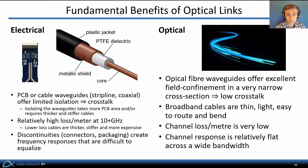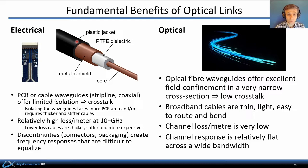Optical links offer some fundamental benefits compared to electrical links. Electrical printed circuit board or cable waveguides, whether strip line or coaxial cables, offer limited isolation from each other, and therefore crosstalk is a significant impairment. If we want to mitigate that impairment, we have to isolate the waveguides from each other, requiring more real estate on the PCB or thicker, stiffer cables.